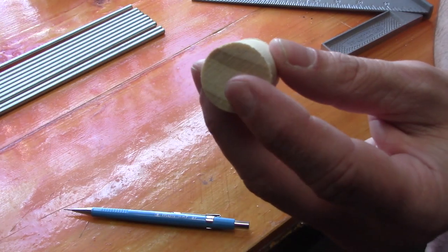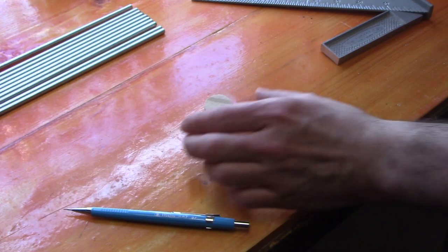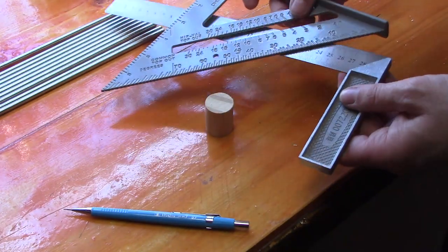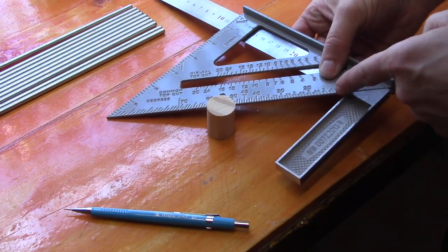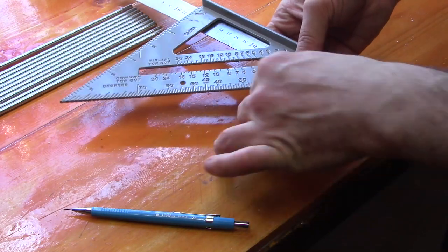Next we need to drill through the center of these. To find that point, we take our square and speed square, put them together and it gives us this 45 degree angle.